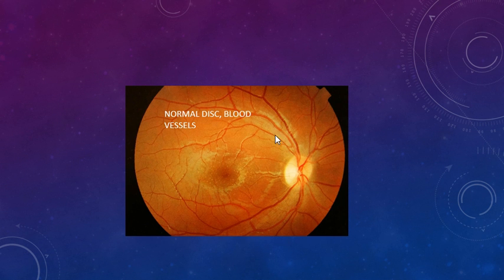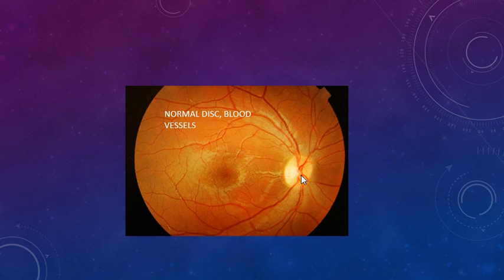This is the same image showing a normal optic disc and normal retinal blood vessels with some drusen in the macular area due to age-related macular degeneration. The vitreous here is clear — that is why we are able to see all the structures very clearly. Remember, this image is taken after dilation of the pupil with dilating drops such as tropicamide or cyclopentolate, with or without phenylephrine.